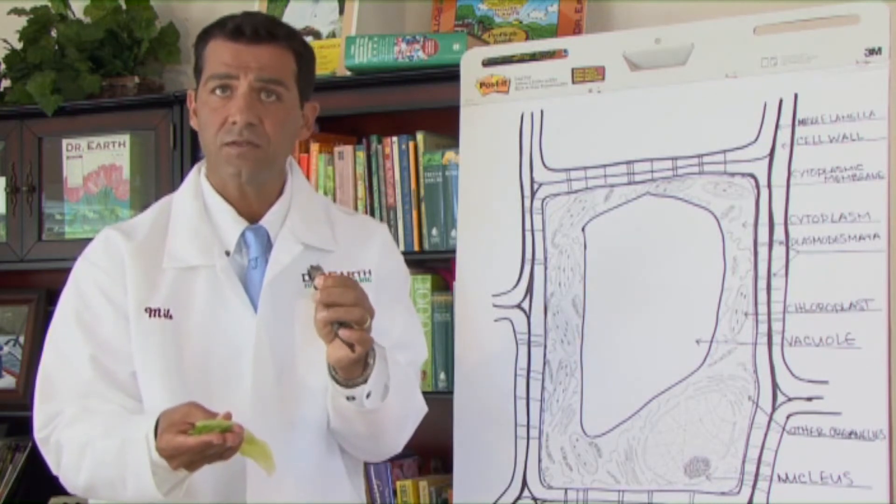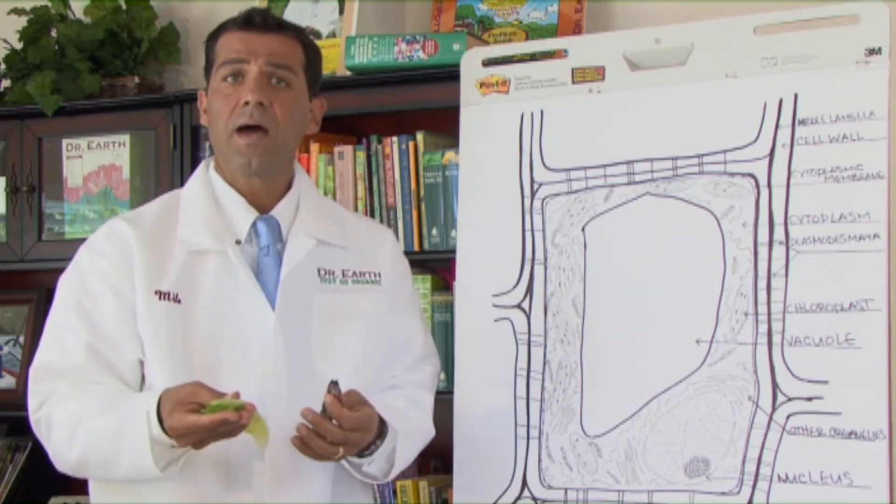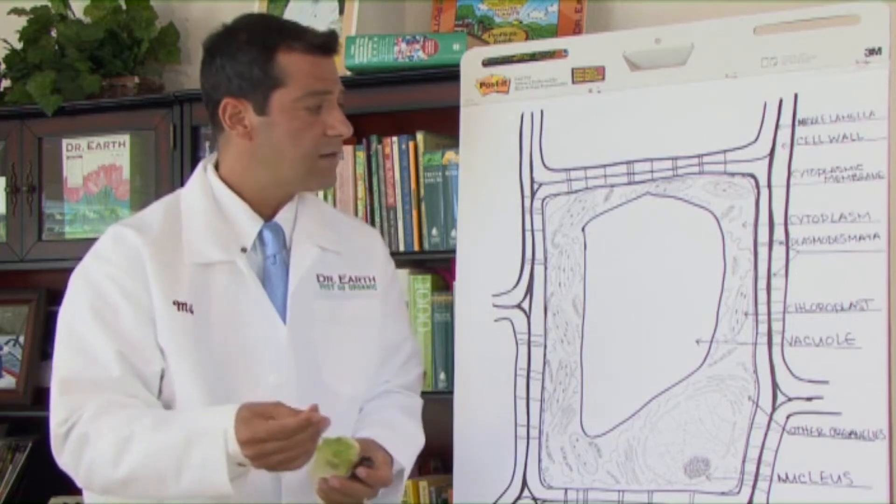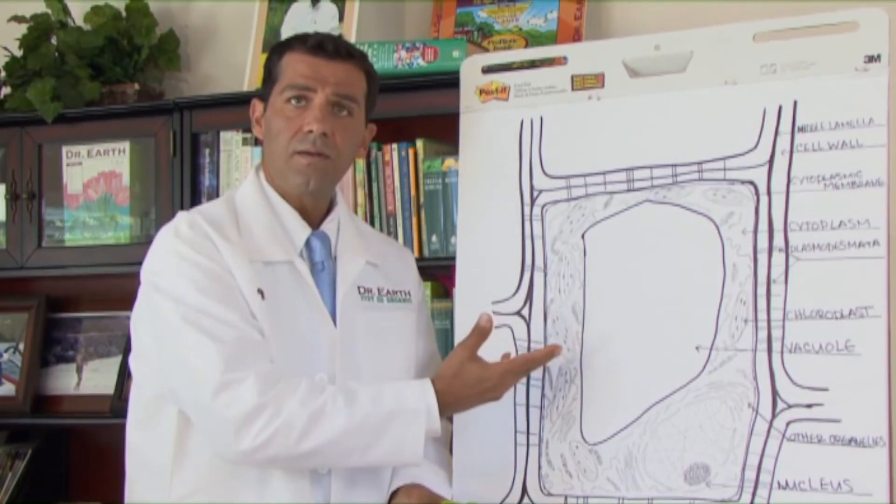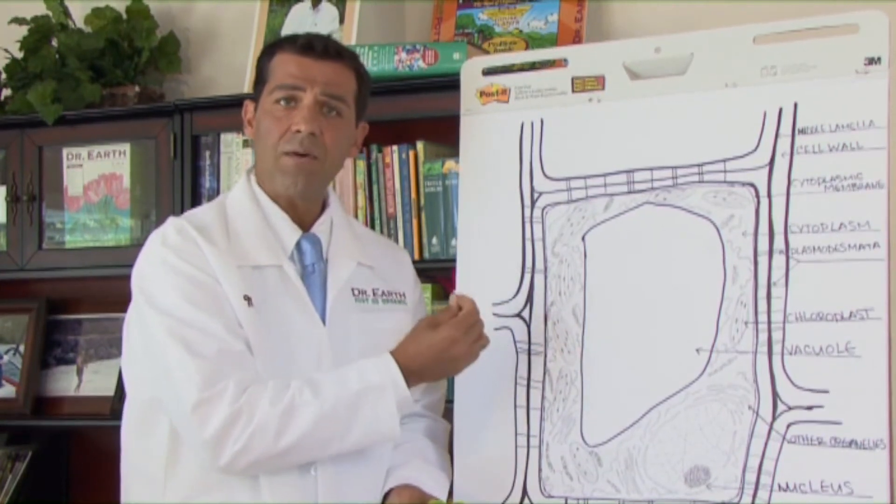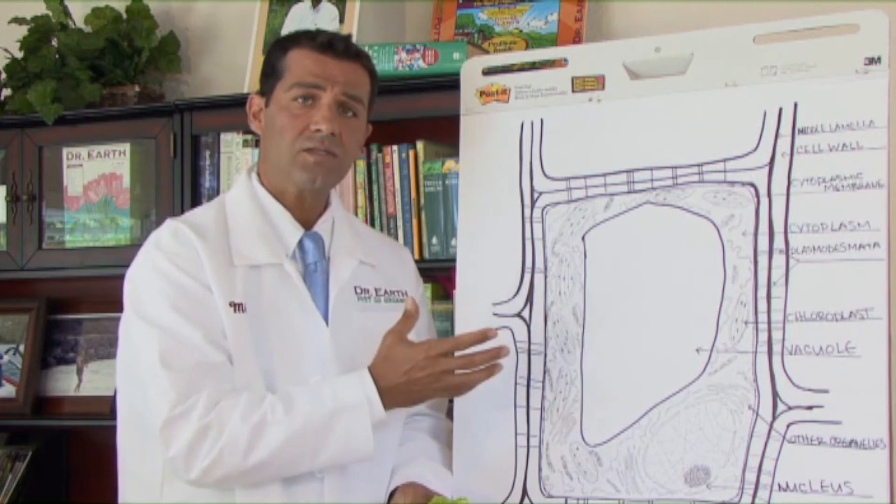So when I'm inventing a product, when I'm formulating something, I want to make sure that I develop it with the cell in mind. That's how I build it on the cellular level: healthy plants, healthy humans.